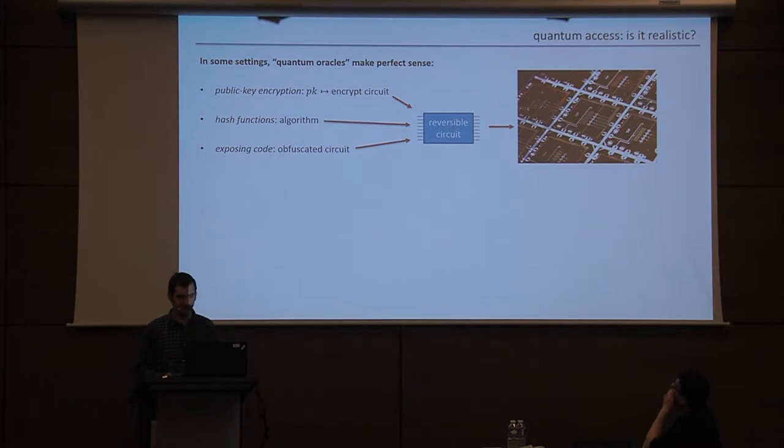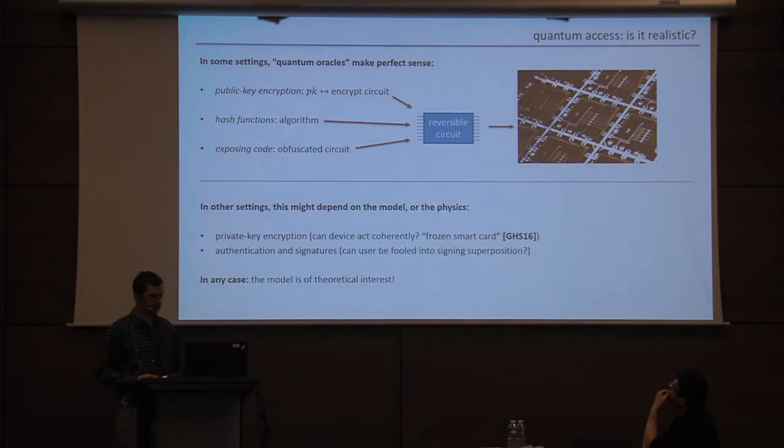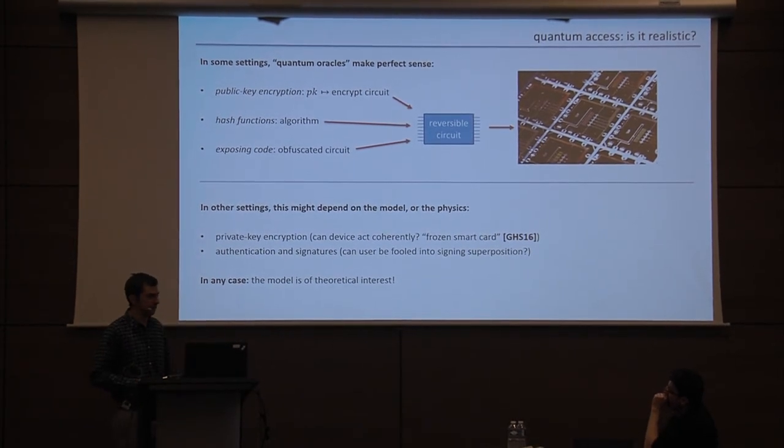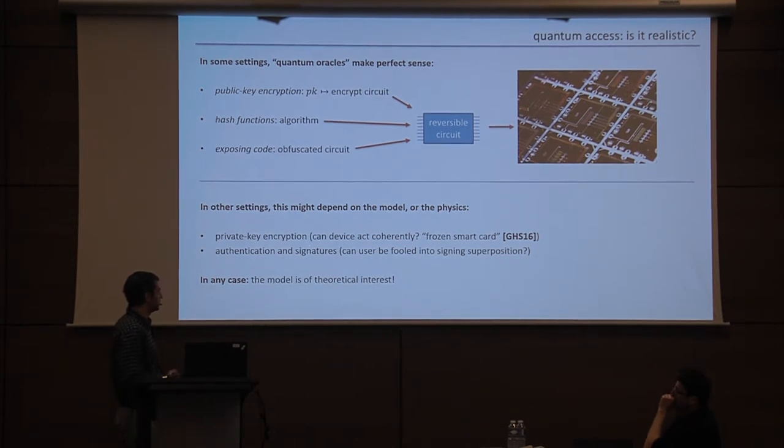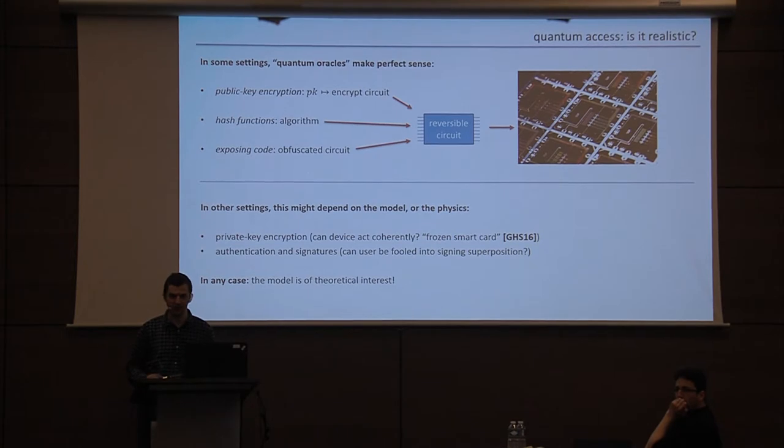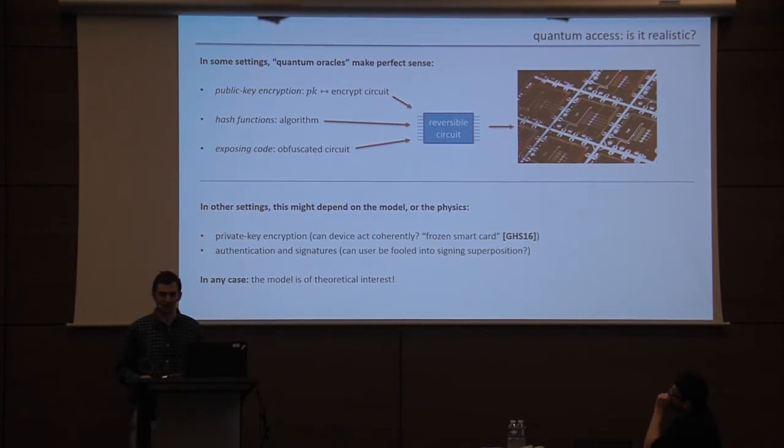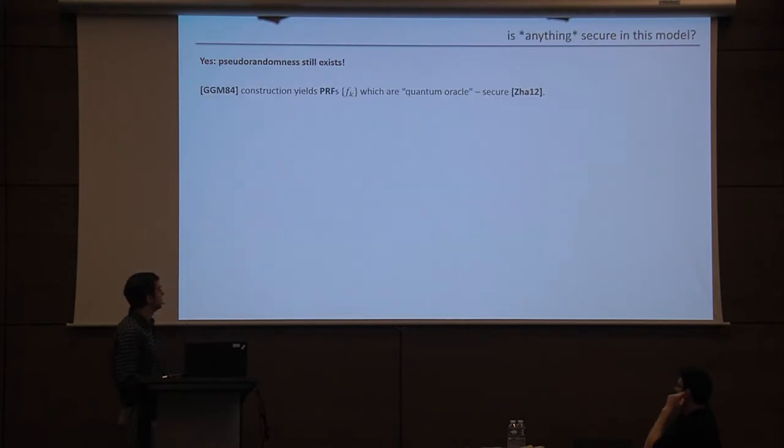So does this model make sense? Is it realistic? That depends on your view. I think in some settings it makes perfect sense. Certainly in any setting in which the adversary gets access to code, that code can always be transformed to a reversible circuit and then run on your quantum hardware. And so certainly in the case of public encryption or hash functions or when you're exposing code via obfuscation, this is definitely a model that you need to be thinking about. In other settings, maybe this depends on the model that you're interested in or somehow the physics or even the engineering of the particular device. So for example, maybe in private key encryption, your encryption scheme will run on some very small smart card and you're worried that some clever adversary will be able to take it back to their lab and put it into their dilution refrigerator and run it coherently.